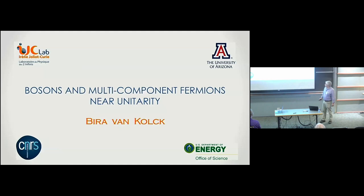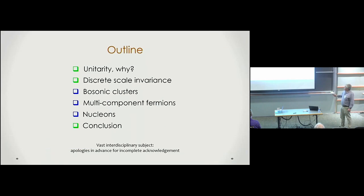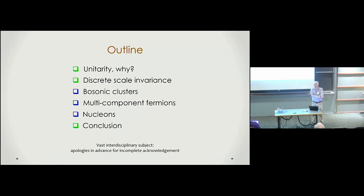I'd like to talk about bosons and multi-component fermions near the unitary limit. Since I'm the first speaker, I'm going to spend some time on things that most of us know — what unitarity is and why we're interested in it — and then talk about some interesting consequences of unitarity. I apologize in advance; this is an interdisciplinary meeting and I'm sure I'm not going to be able to cite everybody properly, but I'll try when I can.